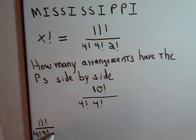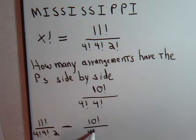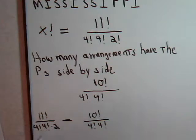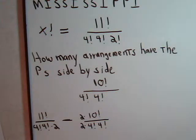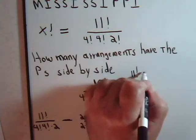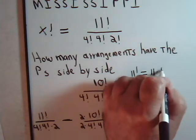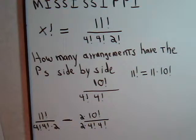Minus 10 factorial divided by 4 factorial times 4 factorial. And here the denominators are almost the same. Let's multiply numerator and denominator by 2. So now these are the same, we can factor this out. And notice 11 factorial, that equals 11 times 10 factorial.